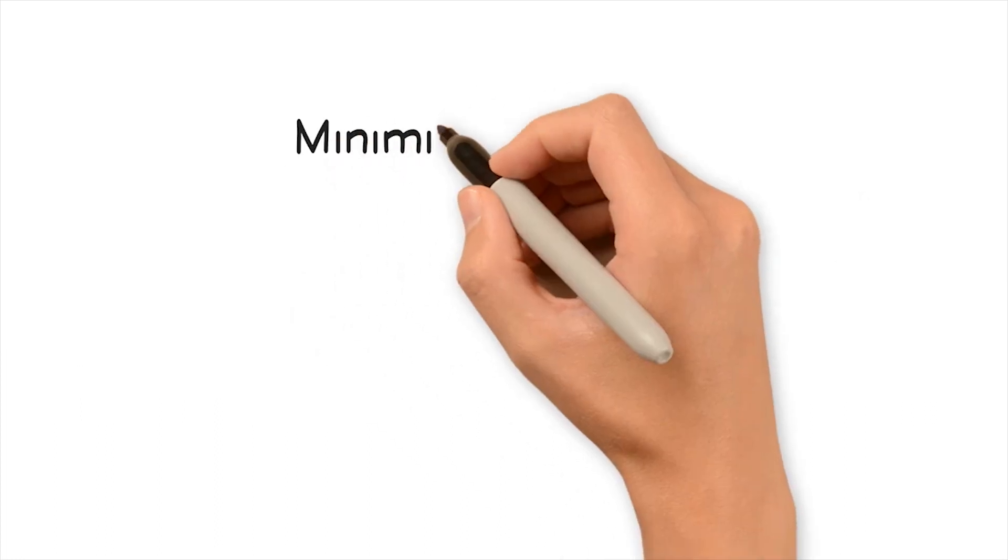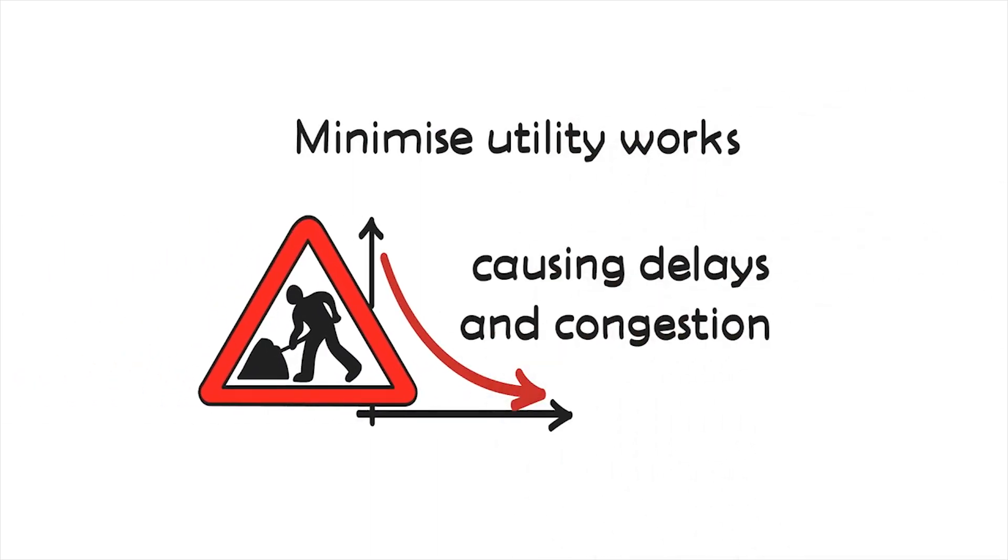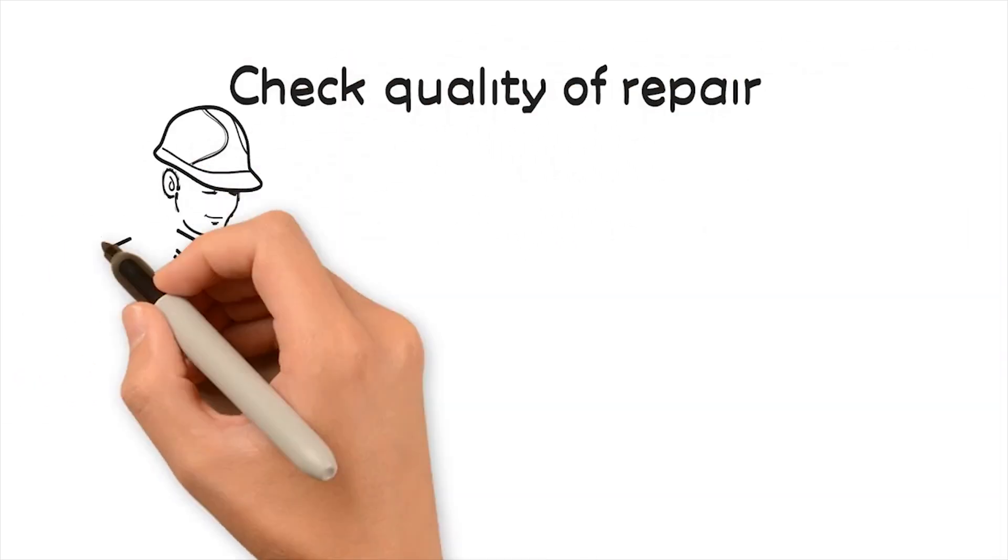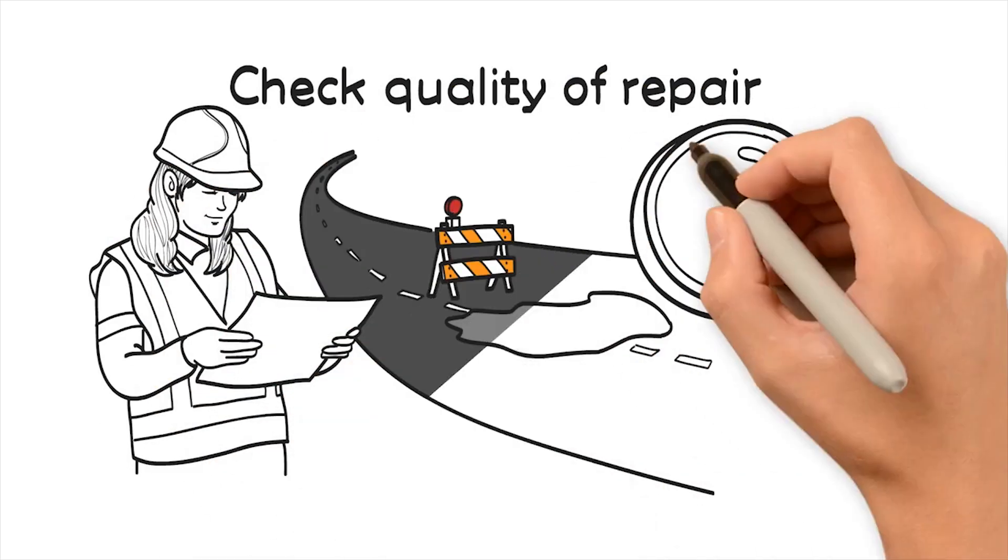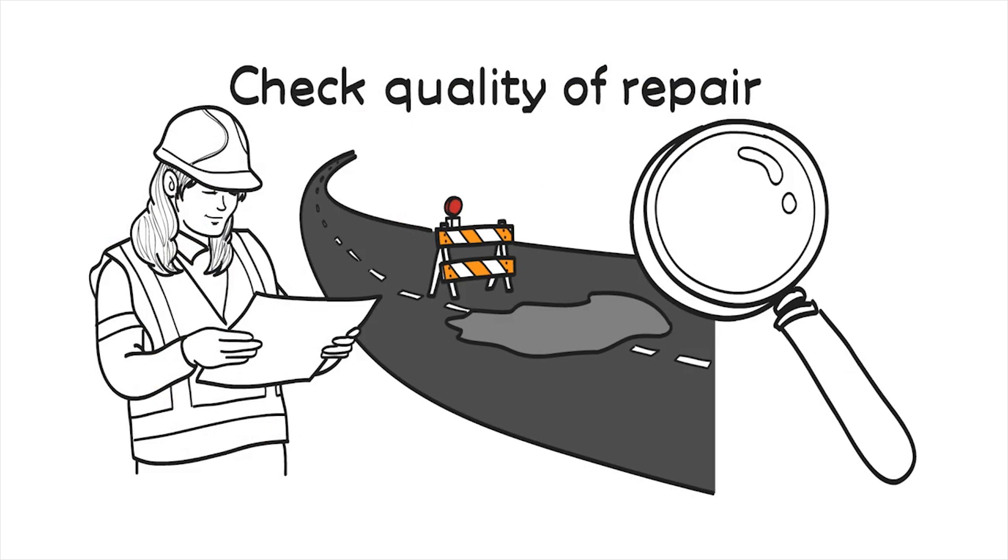Minimize utility works and check quality of repair. Road works are often blamed for causing delays and congestion. They also lead to potholes forming as the opening of the road weakens the structure. Local authorities must also check up on the quality of the reinstated carriageway to ensure that the utility company's contractor has done a decent job.